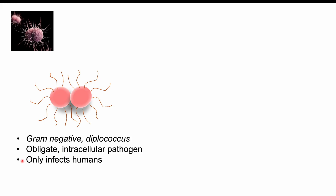This bacteria only infects humans in nature, and there are multiple strains of Neisseria gonorrhea. Some of these include serum-sensitive strains and serum-resistant strains. This terminology has to do with the strain's ability to evade the complement cascade. Serum-sensitive strains are sensitive to the complement cascade, so the immune system can generally deal with them better, whereas serum-resistant strains are able to evade this mechanism and are more resistant to the host immune system.